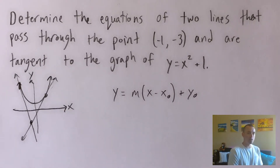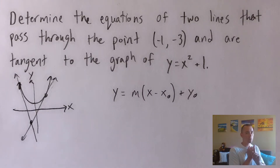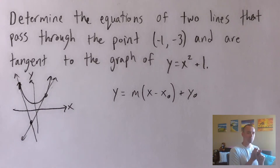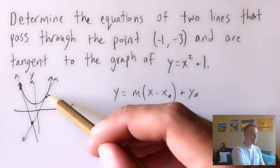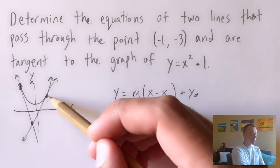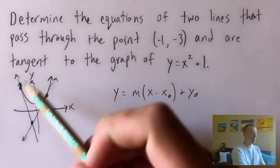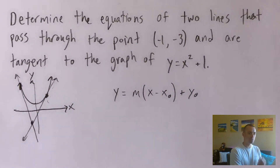The generic form is y equals M times (x minus x-zero) plus y-zero. M is our slope, and x-zero, y-zero is some point that lies on this line. In order for this line to be a tangent line to the function, it needs to share two things in common with the function: it needs to go through the same point, and at that specific point it needs to have the same slope as our function. So we have to come up with a generic version representing each of these two things, and figure out the slope of x squared plus one at those two points.